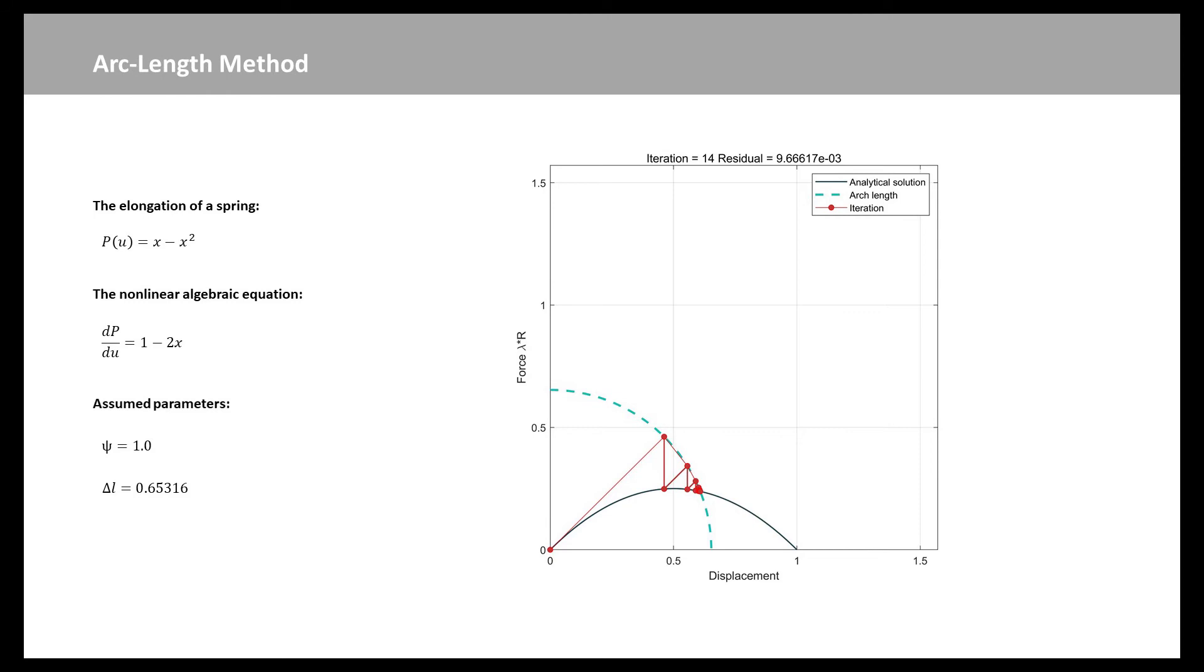In this case, we assume Psi equal to 1 and delta L equal to 0.65316. It is easy to know the arc-length method can model the decreasing segment of a nonlinear curve.